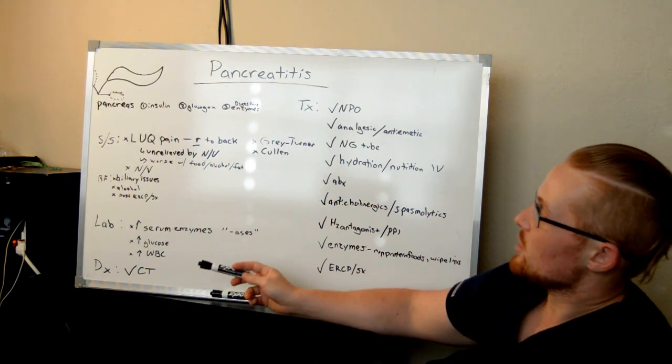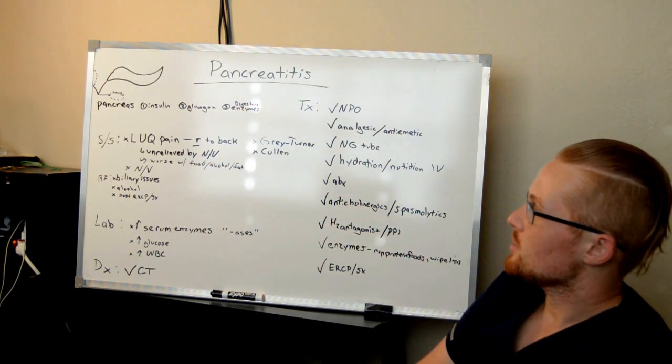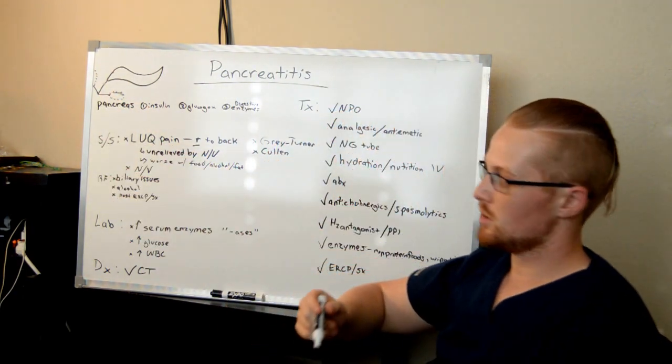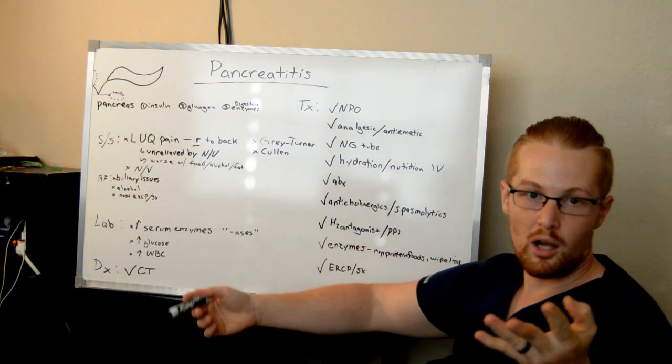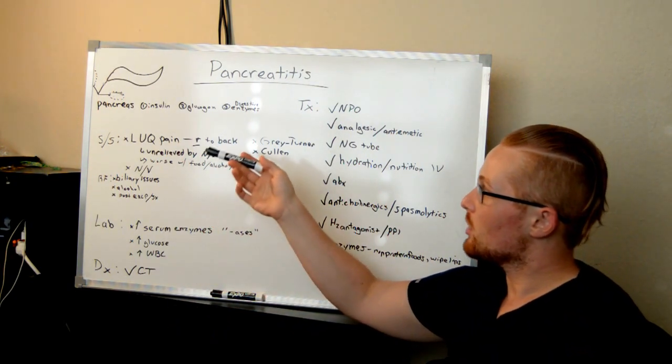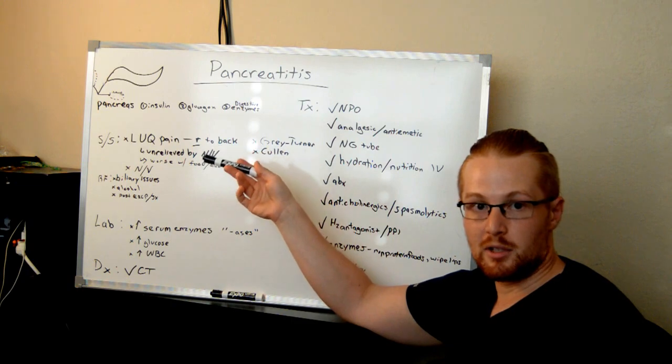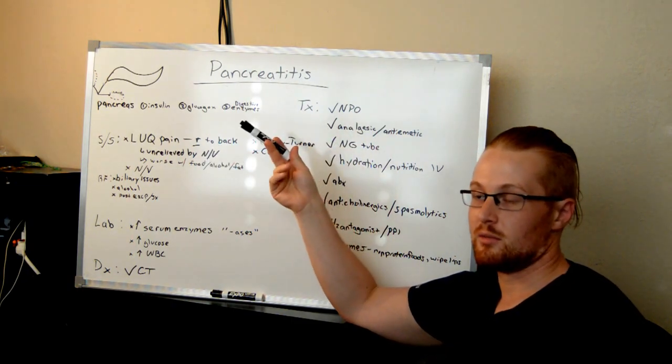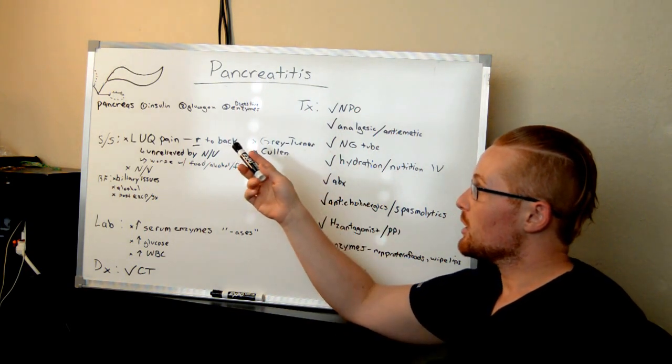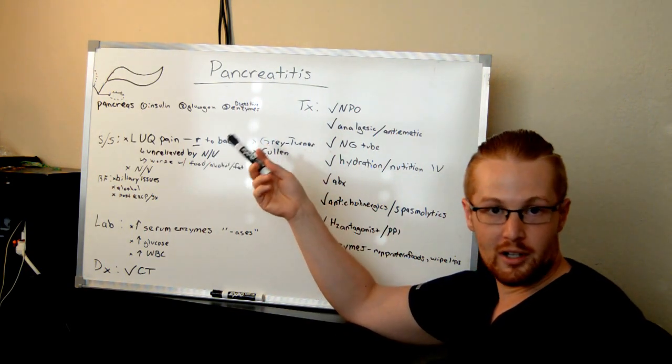So when you have pancreatitis, there's inflammation of the pancreas. Typically here where it connects to the biliary ducts, you will see a clot of some sort that will basically make the digestive enzymes back up into the pancreas, in which case the pancreas will be digesting itself at that point. That could be caused by a gallstone or other obstructions.